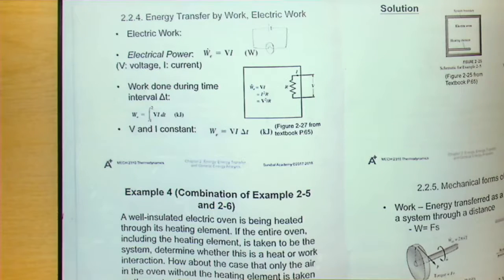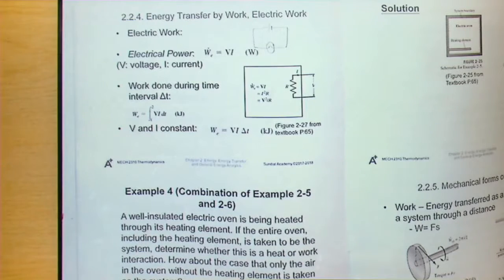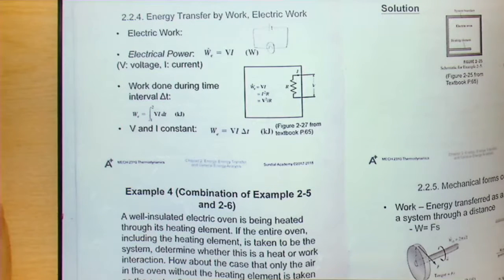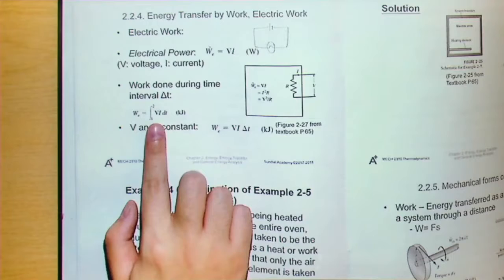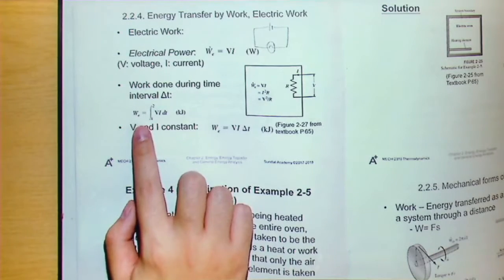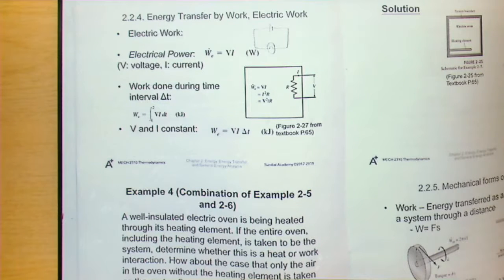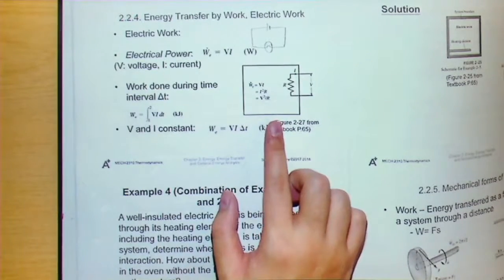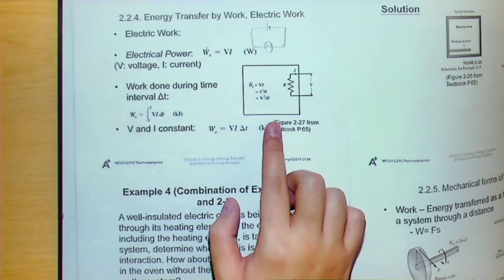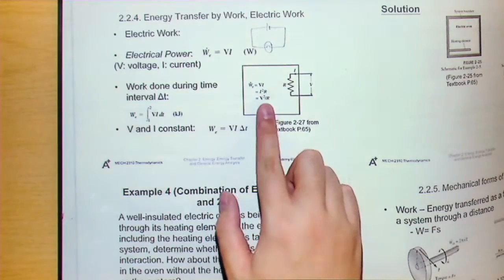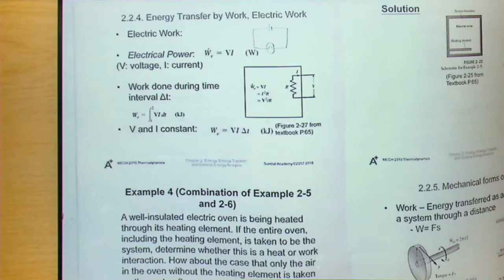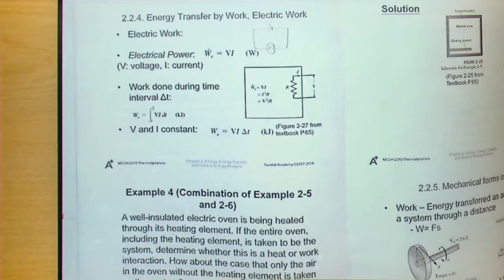If voltage and current are changing, the total electrical work is given by the integral from one to two of V·I dt. If both V and I are constant, they come out of the integral and we get W_e = V·I·Δt. If a resistor is involved, Ohm's law V = IR can be applied, allowing electrical power to be written as I²R or V²/R depending on which values are given.